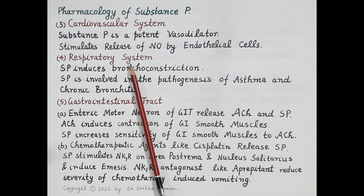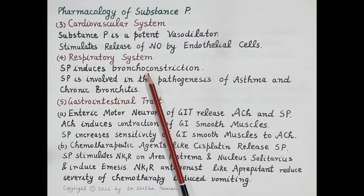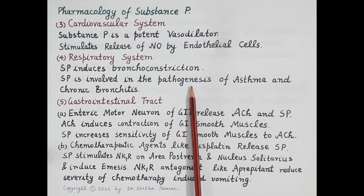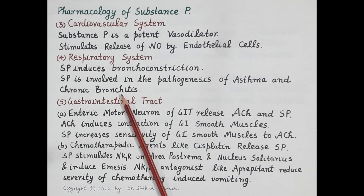Regarding the effect of substance P on the respiratory system: substance P induces bronchoconstriction, causing the bronchial tubes to become very narrow. Passage of air through these bronchial tubes becomes very difficult, causing difficulty in breathing. Hence substance P is involved in the pathogenesis of diseases like asthma and chronic bronchitis.